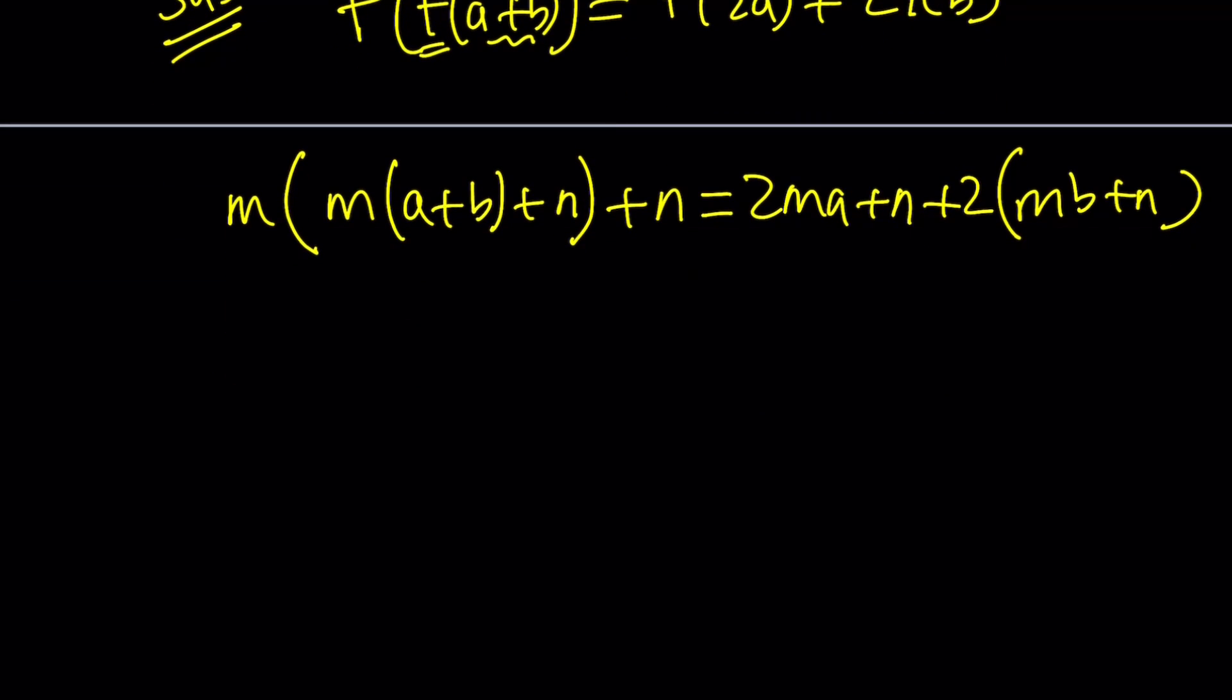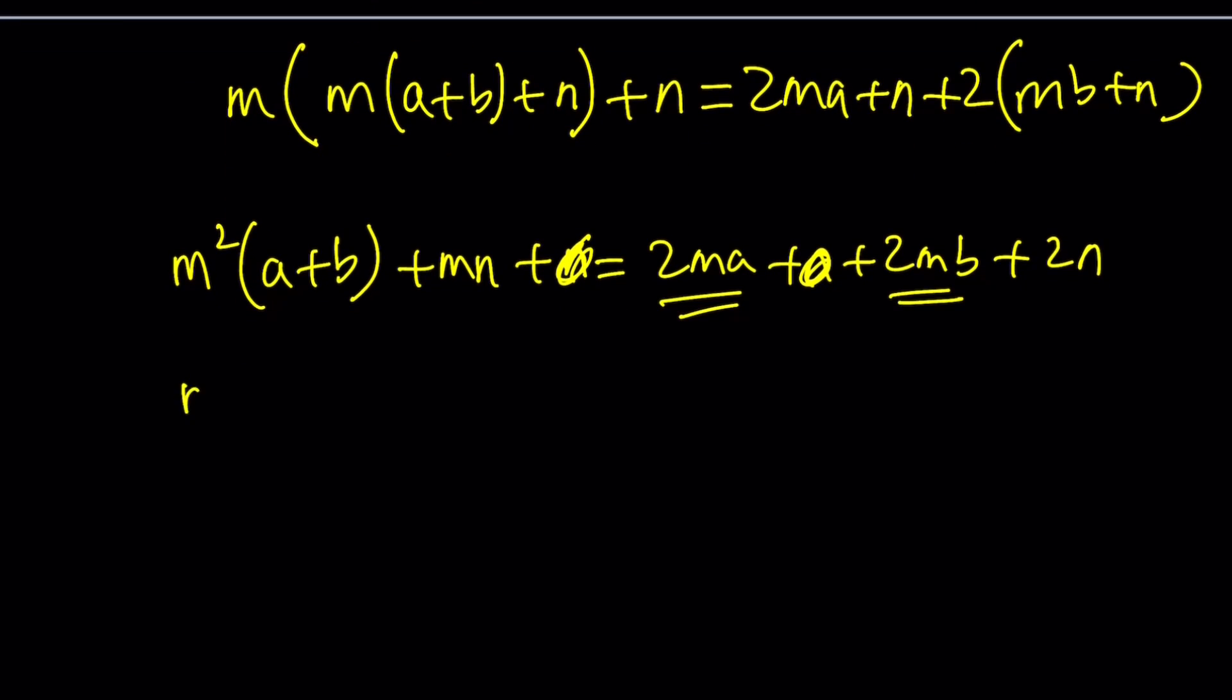Now, let's go ahead and expand everything and try to simplify this as much as we can. Notice that we're going to get m squared times a plus b from here. I'm going to try to keep the a plus b as a quantity because later on it's going to be helpful. Plus mn plus n. That equals 2ma plus n plus 2mb plus 2n. Now, we can cancel these out and put these two together. m squared times a plus b plus mn equals 2m times a plus b plus 2n.